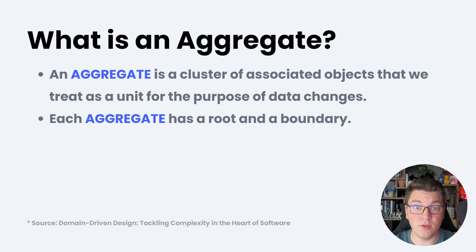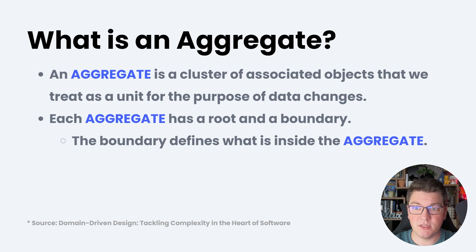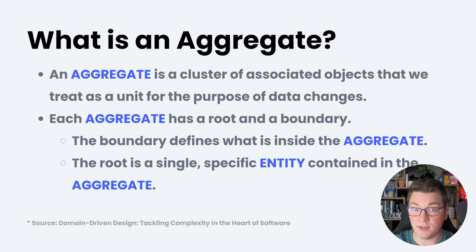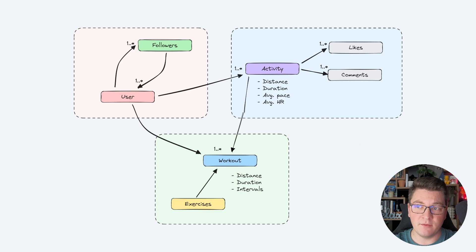Each aggregate has two important components: an object representing the aggregate root, and an aggregate boundary. The aggregate boundary defines what belongs inside of the aggregate and is mostly logical, though we enforce it through our code. The aggregate root is a single entity contained inside of the aggregate, and we use it to identify the entire aggregate.